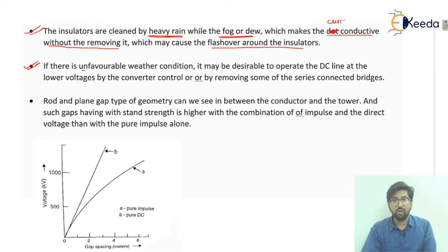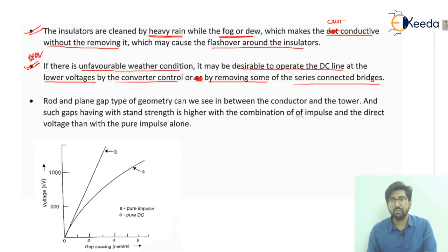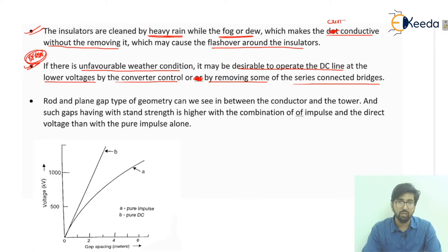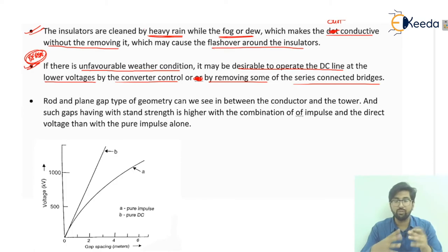Under unfavorable weather conditions, it may be desirable to operate the DC line at lower voltages — by converter control or by removing some of the series connected bridges — so that there will be no harm to the equipment.